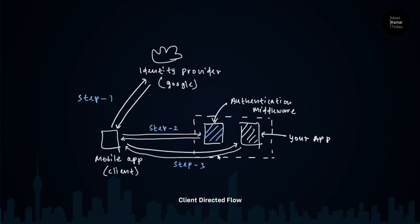For the mobile application to talk to the container app, it has to follow a three-step process. First, it has to get the token from the identity provider — this could be Google, Twitter, or Microsoft Azure Active Directory. Unlike in server-directed flow, the mobile app has to manage this flow itself. After getting the access token, the mobile app submits it to the container app. The container app then validates the token using the client secret and other configurations, and gives back a response containing an access token.